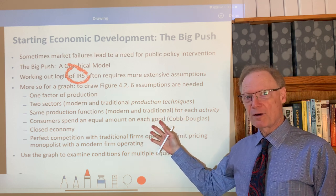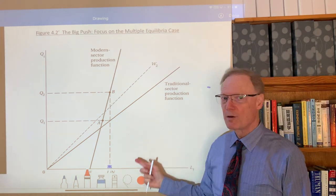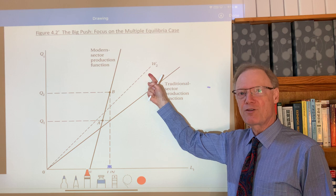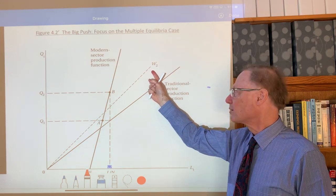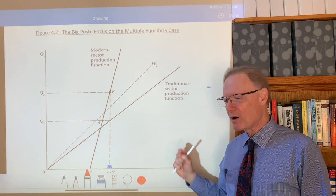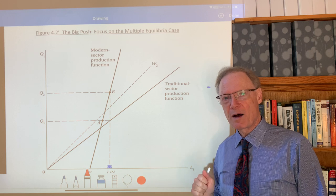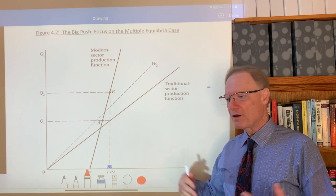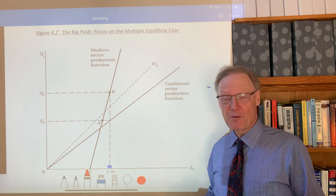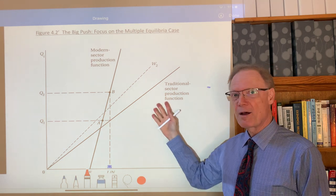These are our basic assumptions. Now I want to move to the graph, which is the equivalent of Figure 4.2 in the textbook. I'm calling this one 4.2 prime because I've simplified the diagram slightly by only looking at one of the three general possible cases of what the wage bill would look like. I'm singling out w2 because it's the most interesting case — it corresponds to multiple equilibria where we could end up with a stable equilibrium stuck in the traditional way of doing things or in a stable modern production situation.